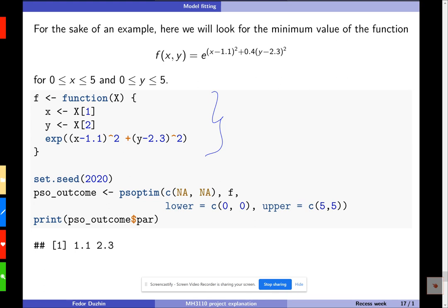Now, what is important here is that the input of my function here is a vector. So x is supposed to be a vector. In all implementations of PSO that I am familiar with, the input of the objective function should be a vector. All right, and in this case, I interpret the first element of the vector as x, and the second element of the vector as y.